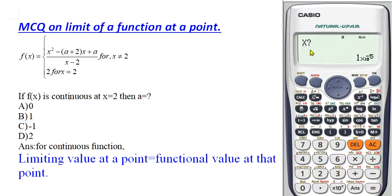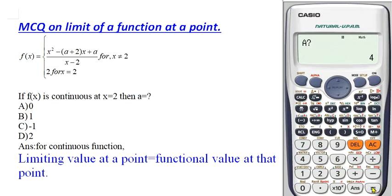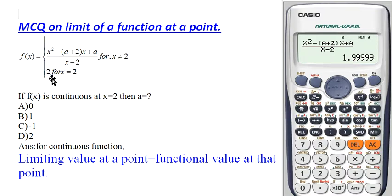The calculator asks for the input value of x. Since we are evaluating the limit as x approaches 2, we take x very close to 2 — let's use 1.999. Then it asks for the value of 'a'. Let me take the first option, which is 0, and press equals.